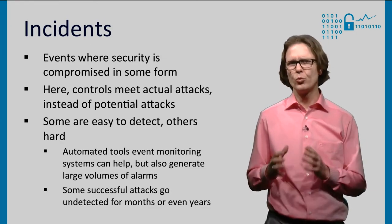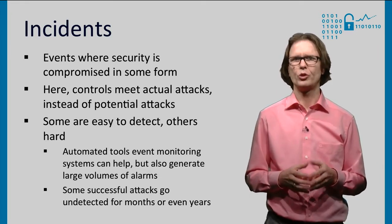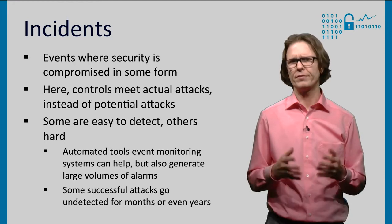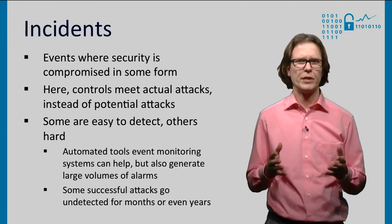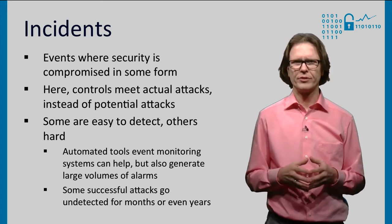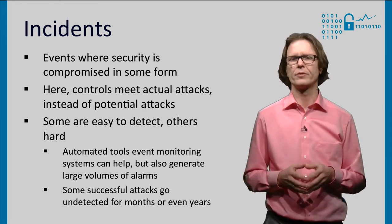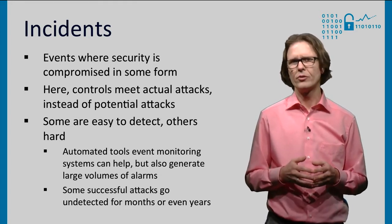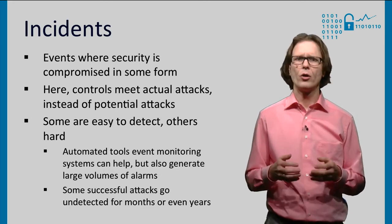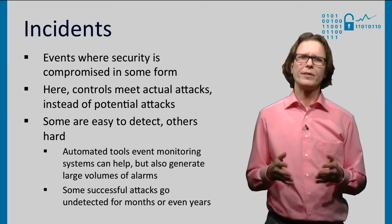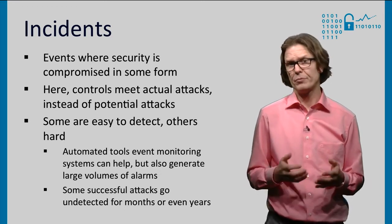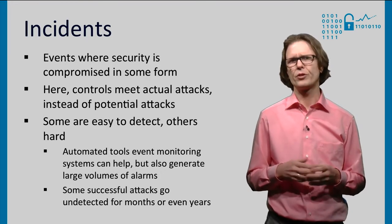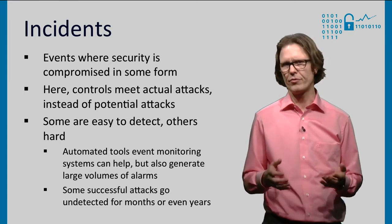Incidents are where the controls meet the real threat environment. Here, actual attacks occur, which may or may not be successful or costly to the organization. Information security controls are imperfect in various ways — they can be poorly implemented or fail in unexpected ways. Incidents shed light on the state of the controls, which you might not otherwise learn about. We can detect these incidents through many different means, with varying levels of detail and fidelity. Some are easy to detect, others hard. Automated tools like event monitoring systems can help, but they typically also generate large volumes of false alarms. More advanced attacks are typically harder to detect, and some successful attacks have gone undetected for months or even years.